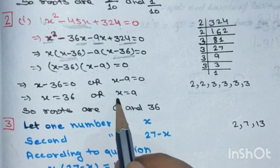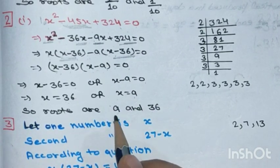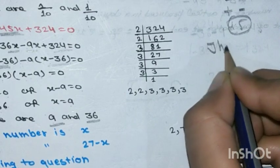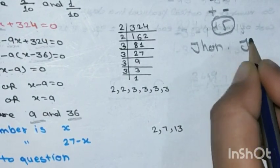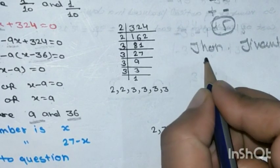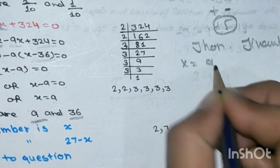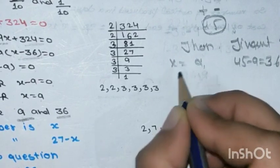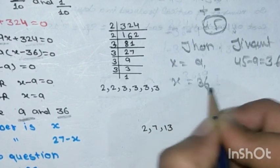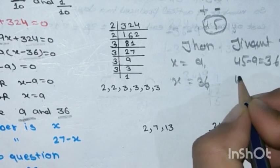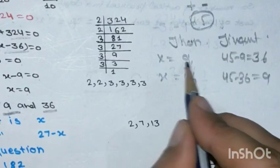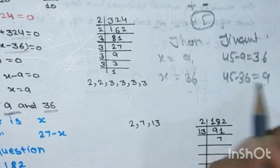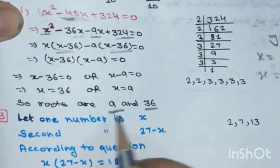Setting each factor to zero: x - 36 = 0 gives x = 36, and x - 9 = 0 gives x = 9. So the two values are 9 and 36. Total marbles = 45. If John has x = 9, Jayvanti gets 45 - 9 = 36. If John has x = 36, Jayvanti gets 45 - 36 = 9. Either way the answer is the same: one gets 9 and the other gets 36.